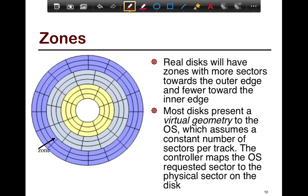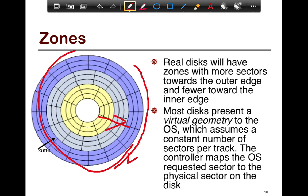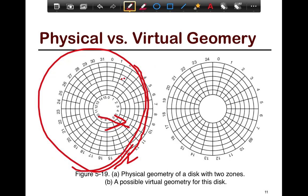Real disks have zones with more sectors towards the outer edge and fewer towards the inner edge, because the circumference of the outer edge is longer, so it can store more data. Most disks assume all sectors have the same density. Even though internally they may be organized differently, they present a virtual geometry to the OS that assumes a constant number of sectors per track. The controller then maps the OS's requested sector onto the actual physical sector.